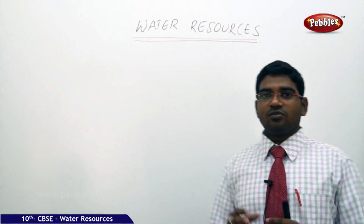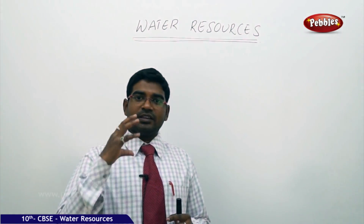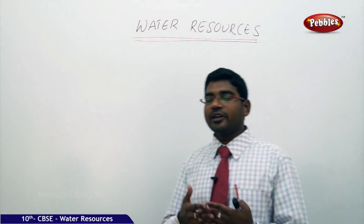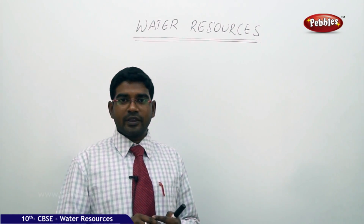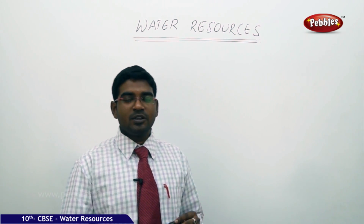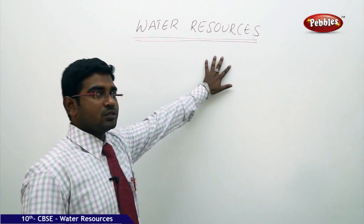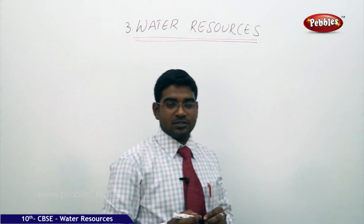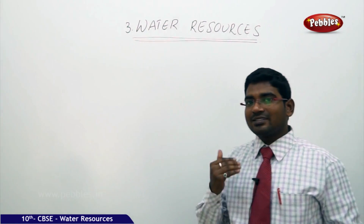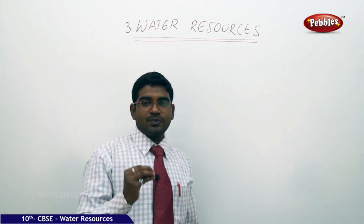We all know that in the entire world, the most important aspect for a human to survive is air. We need to breathe — if you don't get air, you cannot survive. After air, the most important element on the earth that we need is water. So that is the main concept of our lesson today: water resources, given as the third part of our geographical text. In order to understand water resources, let us throw light on the important aspects of water.